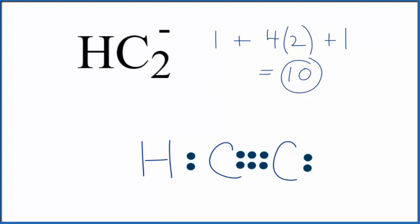Because this is an ion, we do need to put brackets around it. Then we'll put a negative sign out here. So that's the Lewis structure for HC2 minus.